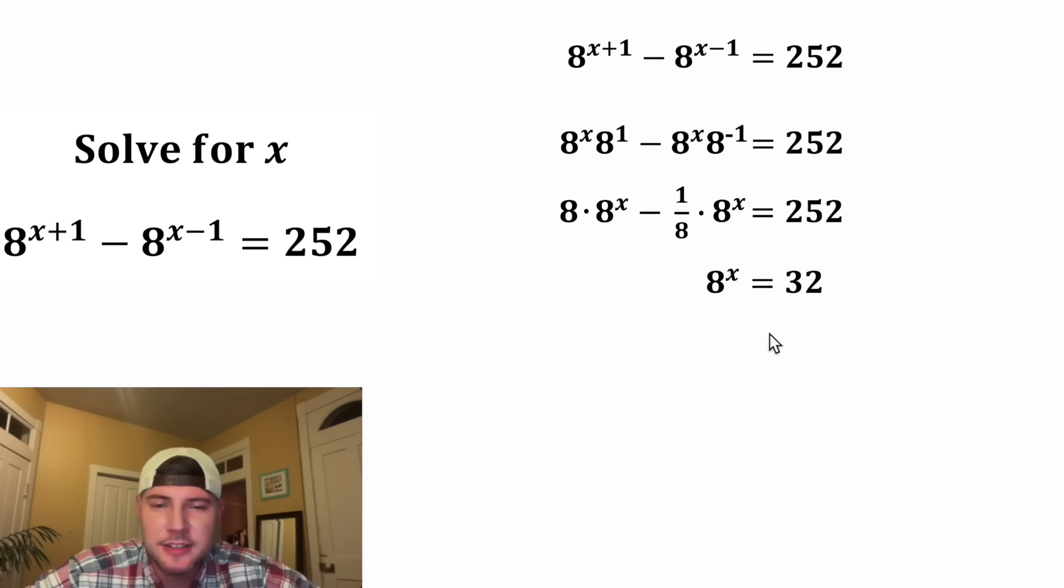Now we have 8 to the x equals 32. A good way to solve this is to give them the same base. Each of these can be expressed with a base of 2. Let's copy this down, and we can rewrite this 8 as 2 cubed. We can simplify this with these notes here.